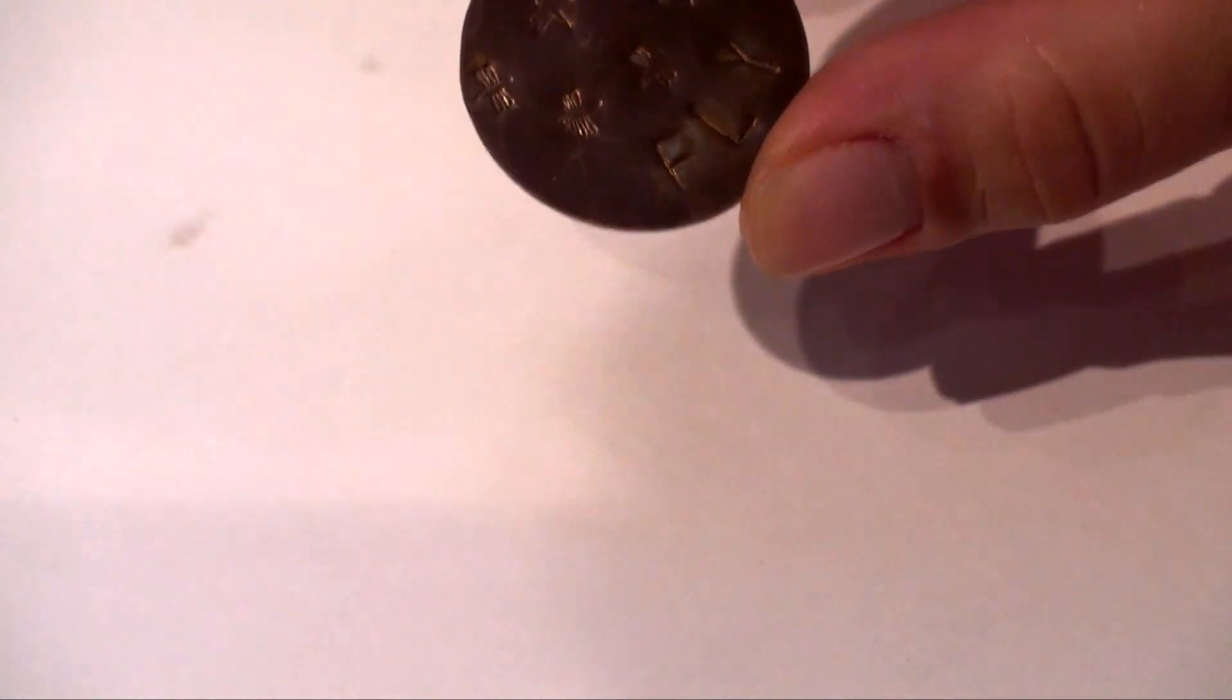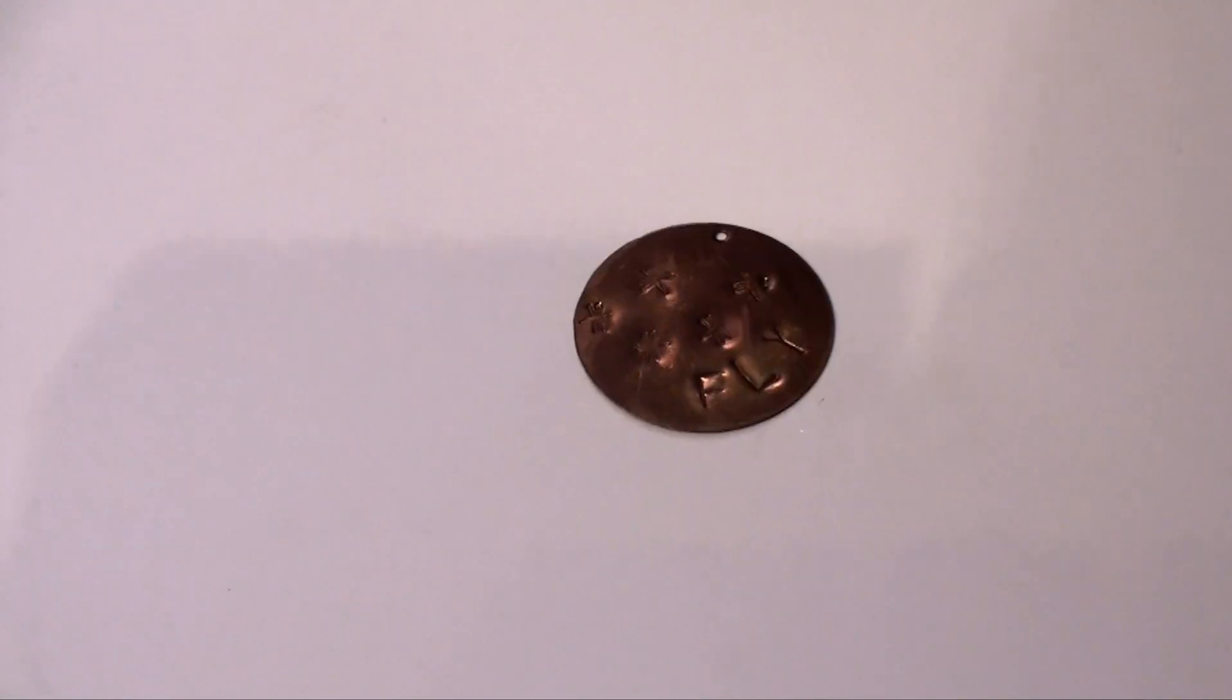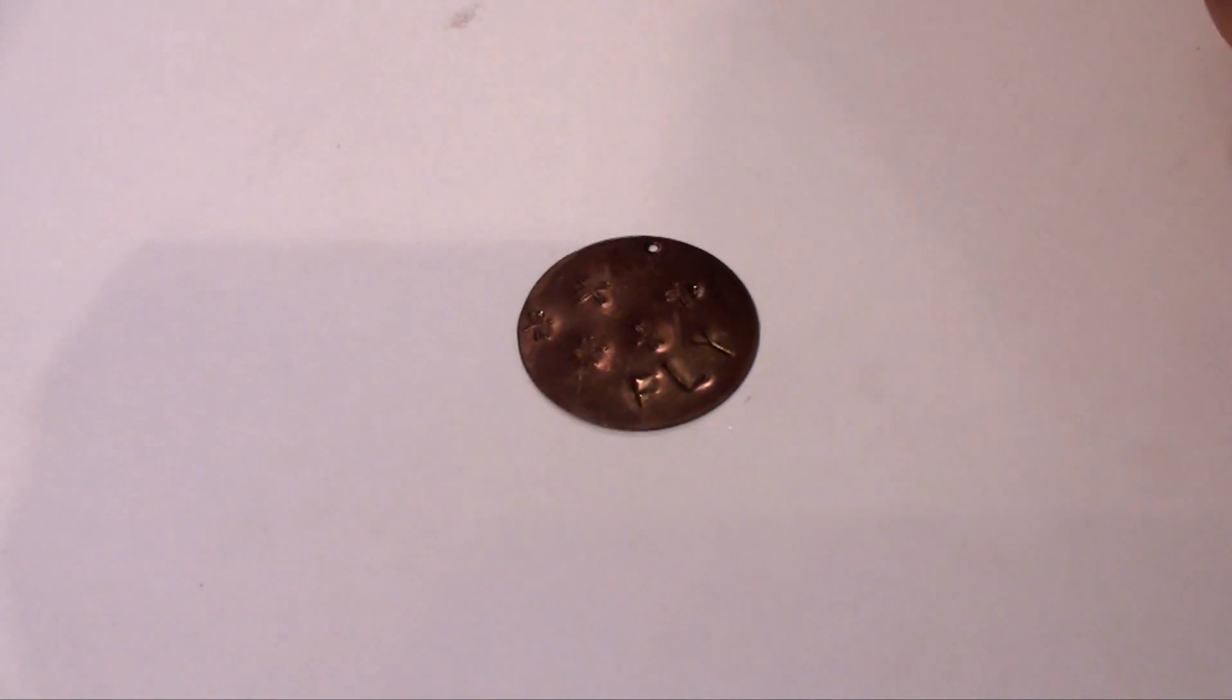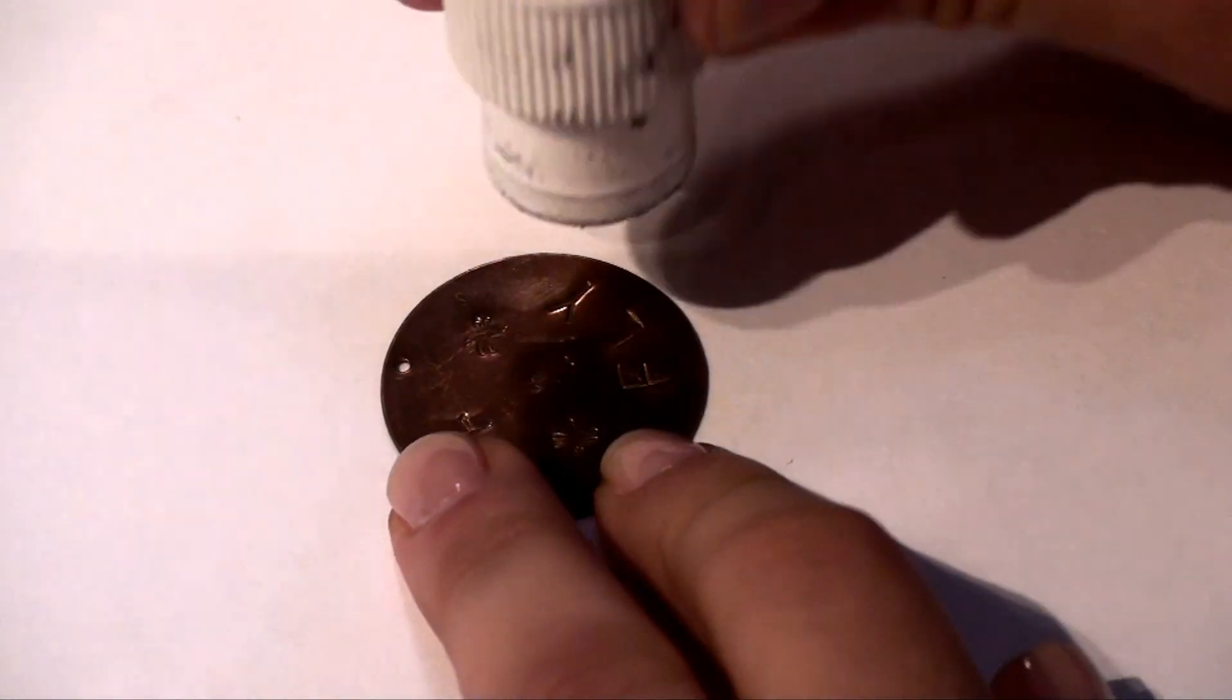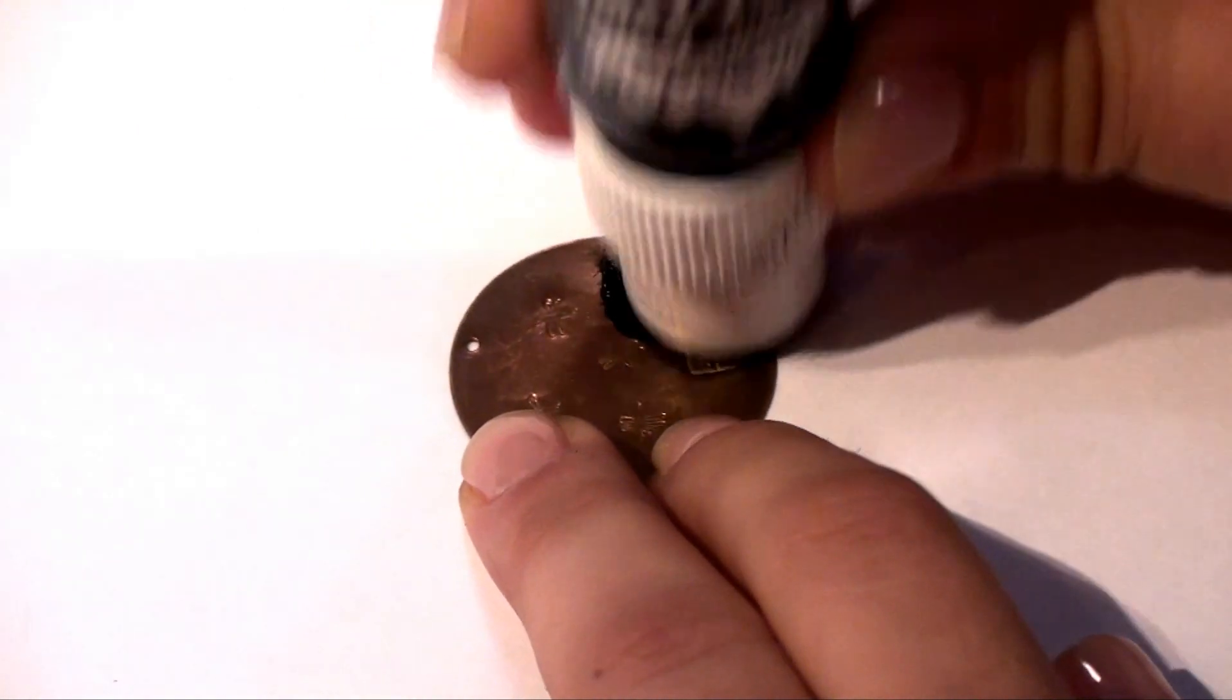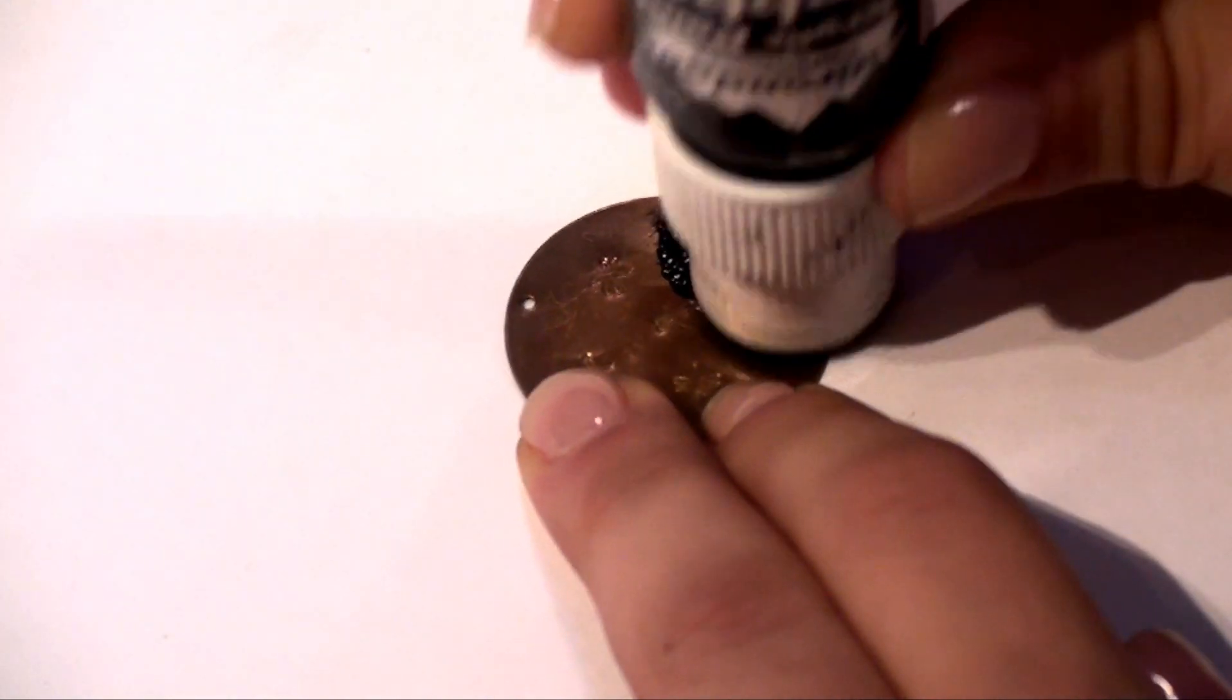Okay, we are going to color in the word and the dragonflies using Ranger acrylic paint dabbers. I like to use the black paint dabbers to color in the words. I think it shows up really nice. I'm going to go ahead and apply that.